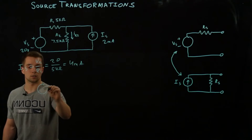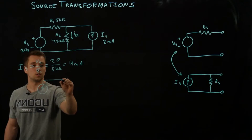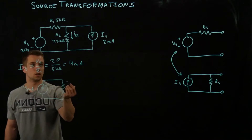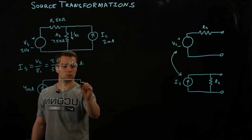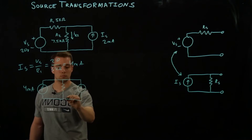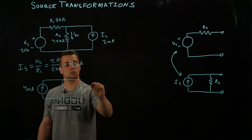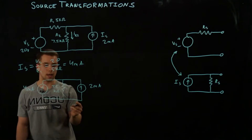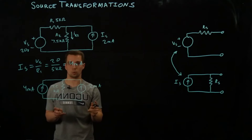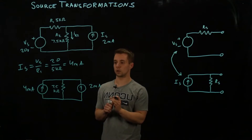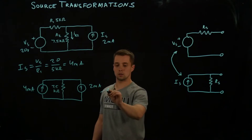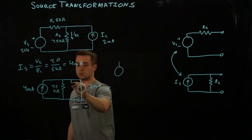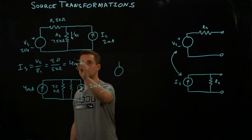So redrawing the circuit, we now have a current source of 4 milliamps with R1 of 5 kilo ohms. We also have the original current source of 2 milliamps, and R2 is still 7.5 kilo ohms. Now we have two current sources in parallel.